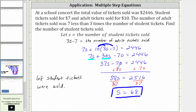It doesn't ask, but if it did ask for the number of adult tickets sold, we would substitute 68 for S into the expression 3S minus seven, which would be three times 68 minus seven. I hope you found this helpful.